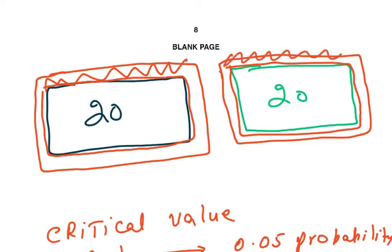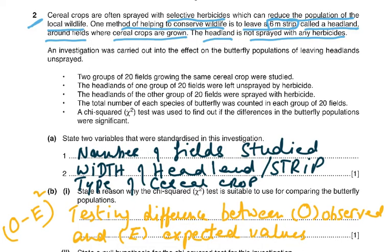I've given you a diagram showing the headland which is not being sprayed — that strip is 6 meters wide. The 20 fields are on one side and 20 fields on the other side, illustrating the width difference.